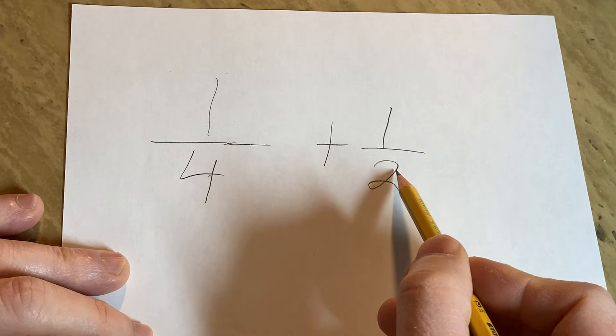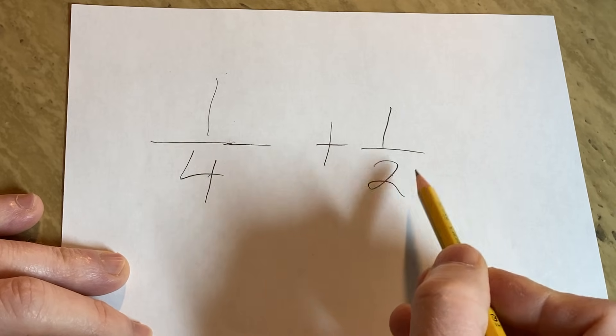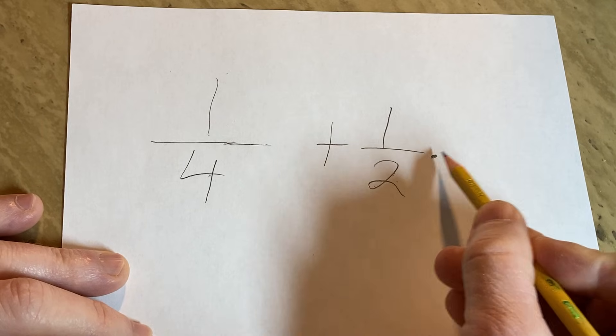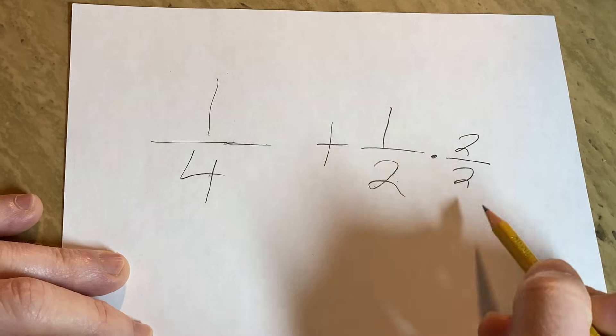To do that, what we can do is multiply this by 2. But you can't just multiply it by 2 because that's not allowed. What is allowed, though, is multiplying by 1, like this.